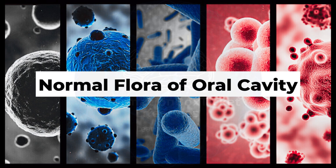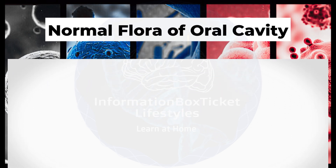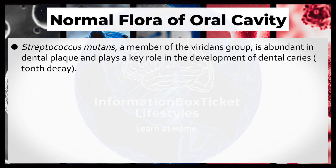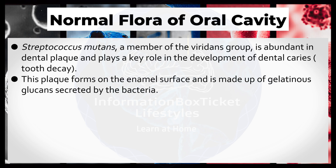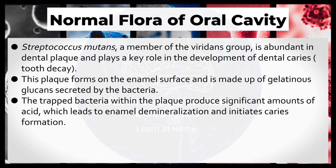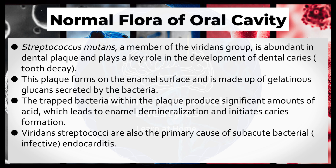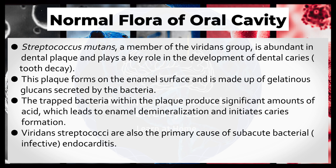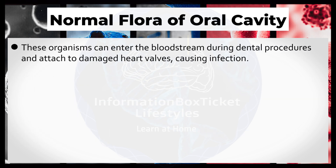Normal flora of oral cavity. Streptococcus mutans, a member of the viridans group, is abundant in dental plaque and plays a key role in the development of dental caries — tooth decay. This plaque forms on the enamel surface and is made up of gelatinous glucans secreted by the bacteria. The trapped bacteria within the plaque produce significant amounts of acid, which leads to enamel demineralization and initiates caries formation. Viridans streptococci are also the primary cause of subacute bacterial infective endocarditis, entering the bloodstream during dental procedures and attaching to damaged heart valves.